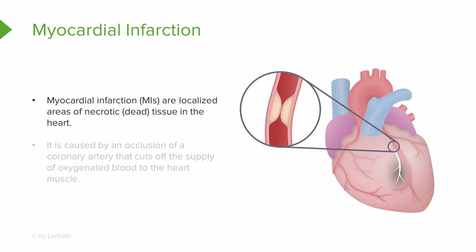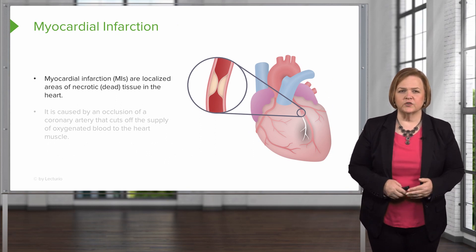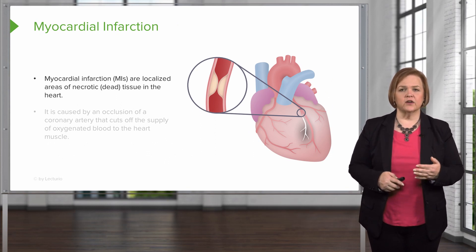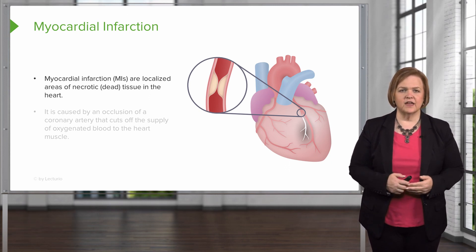You'll see on the drawing how they're kind of pink in color — that means blood supply is present there. But in the part we've zeroed in for you, you see that there's no blood supply down by that tissue that's been infarcted because there's a blockage. That's what a myocardial infarction is. It's a localized area of necrosis — dead tissue in the heart.